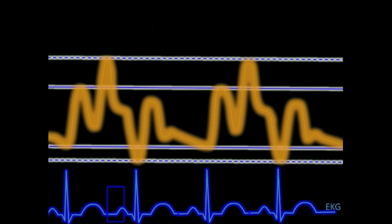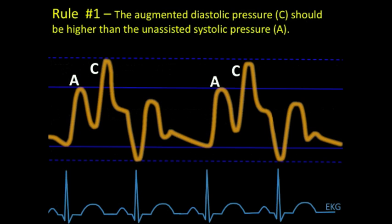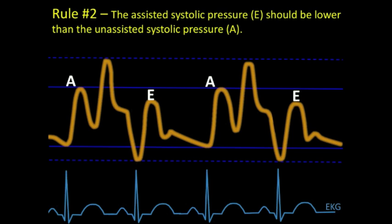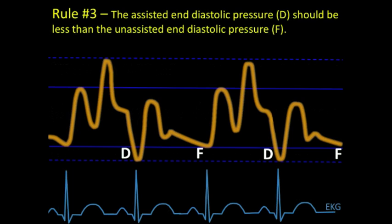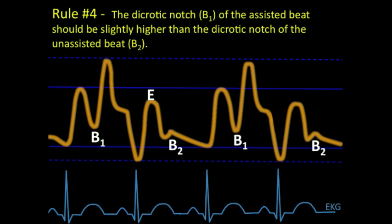There are four rules to remember. Rule one: the augmented diastolic pressure should be higher than the unassisted systolic pressure. Rule two: the assisted systolic pressure should be lower than the unassisted systolic pressure. Rule three: the assisted end-diastolic pressure should be less than the unassisted end-diastolic pressure. Rule four: the dicrotic notch of the assisted beat should be slightly higher than the dicrotic notch of the unassisted beat. The curve in our example meets all four criteria, confirming the balloon pump was properly positioned and optimized.